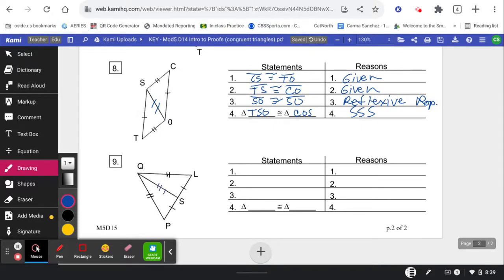Okay, last one, we're going to need this reflexive side here. So let's go with the other two givens first. LS is congruent to PS. QL is congruent to QP. And then QS is congruent to itself. And so finally, triangle QSL is congruent to triangle QSP by side, side, side.